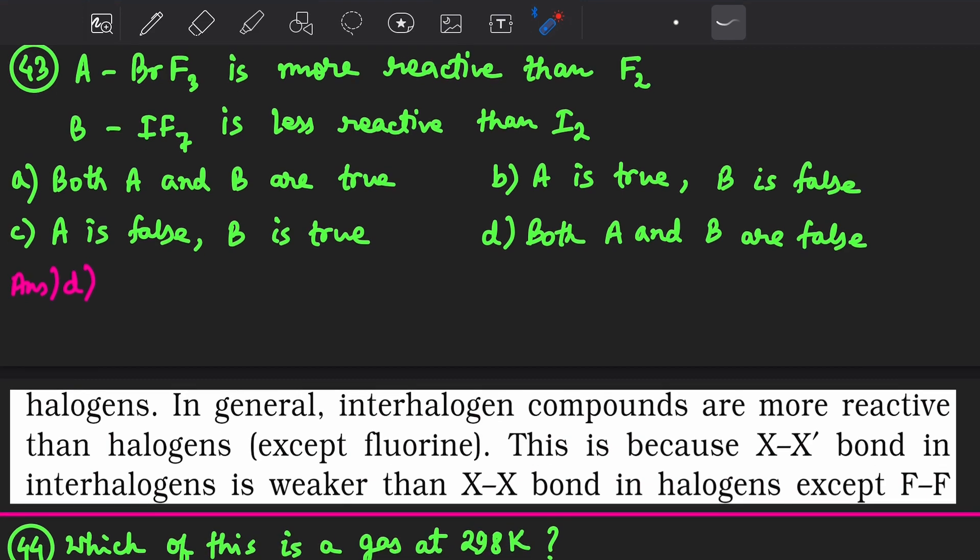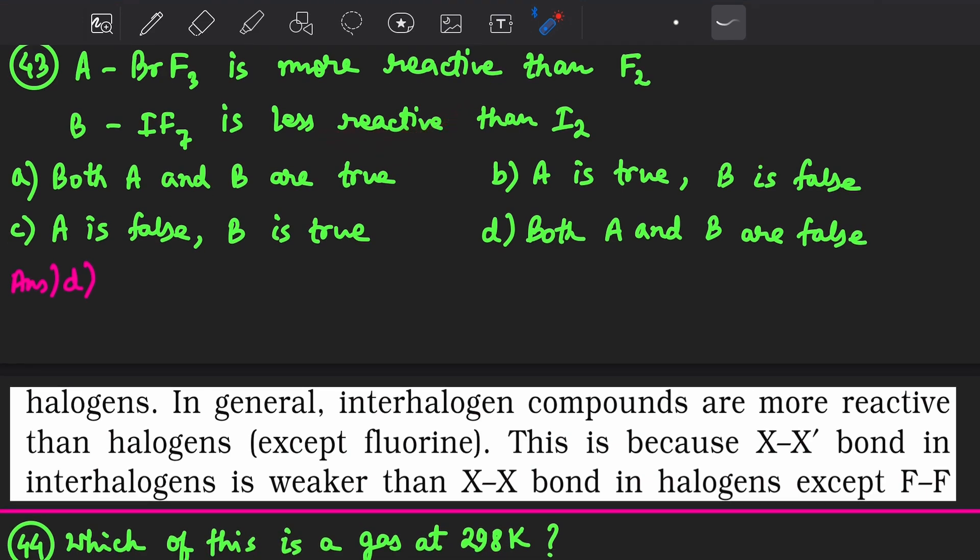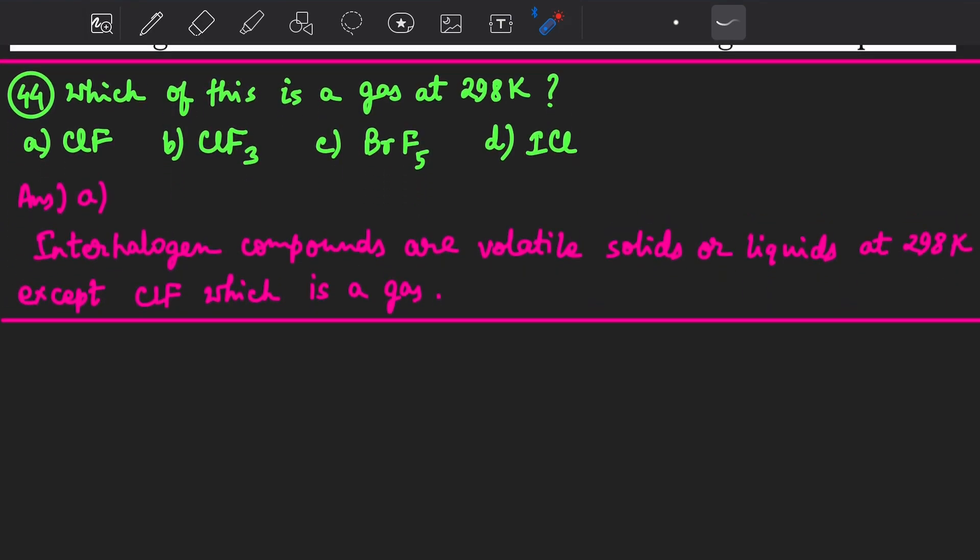Next question: Which of these is a gas at 298 Kelvin? The answer is ClF. All other interhalogen compounds are volatile solids or liquids at 298 Kelvin except ClF, which is a gas. This is from NCERT. Got it?